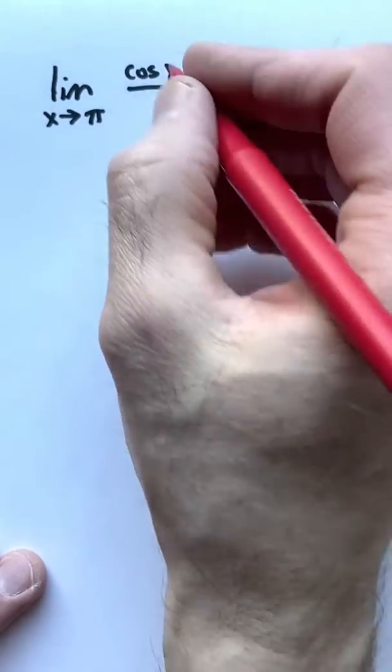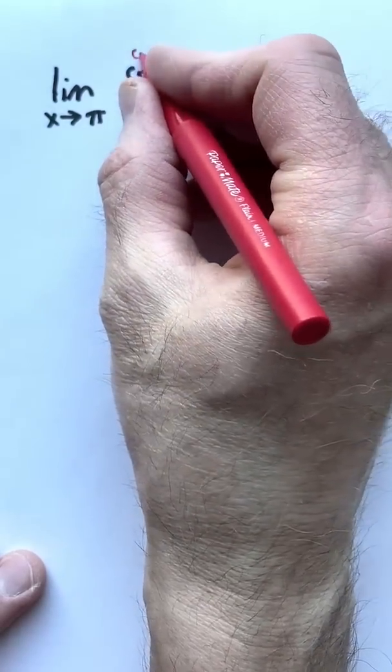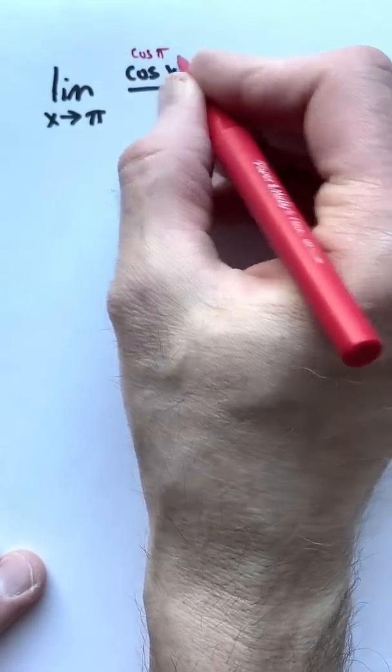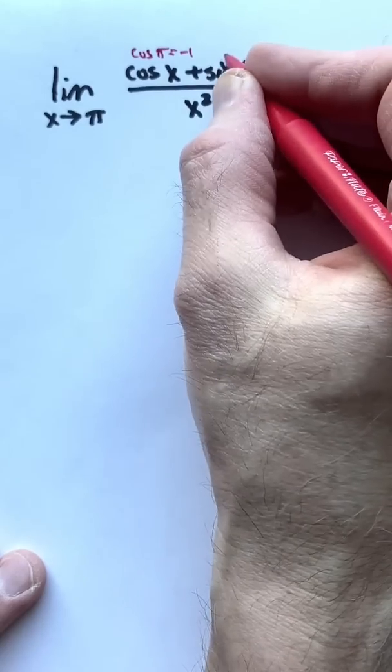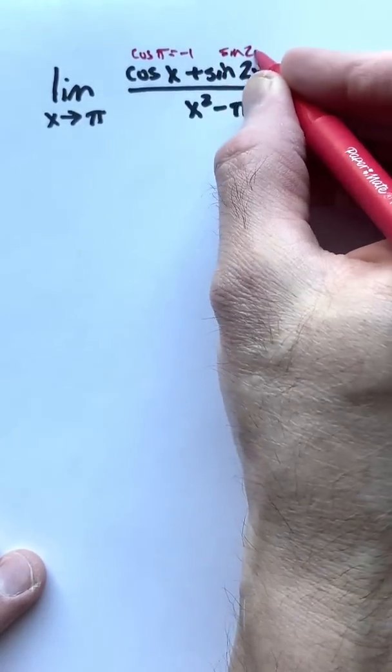With the case of this fraction, if we plug in pi in the top and the bottom, we get cosine of pi, which is negative 1, we get sine of 2 pi, which is 0.